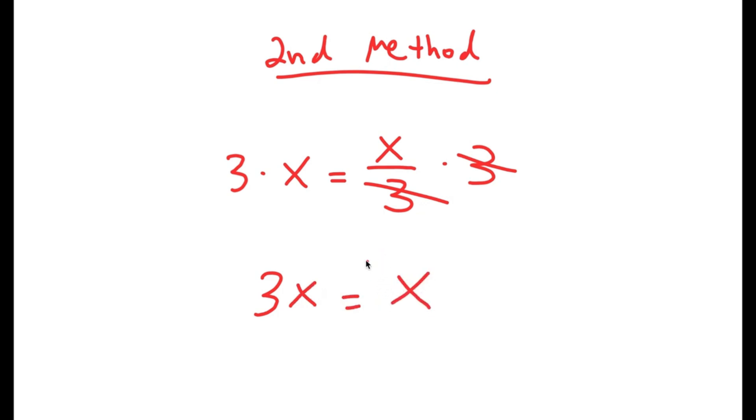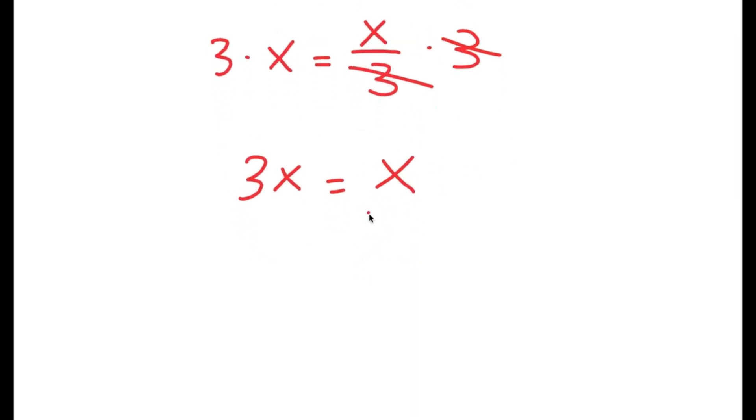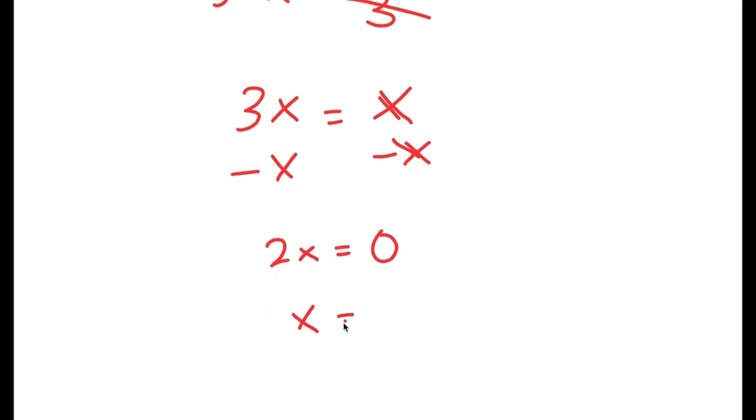So now, the mistake that most people make here is that they divide both sides by x. And when you do this, you just get that 3 is equal to 1, which is a false statement. What you have to do is subtract x on both sides. So now you get 2x is equal to 0, and x is equal to 0.